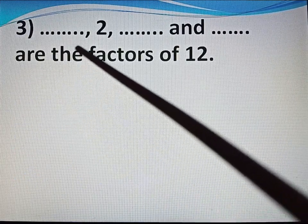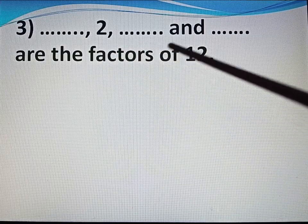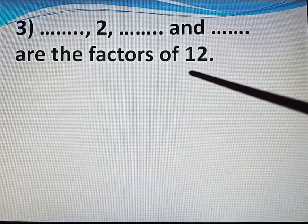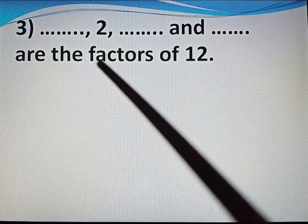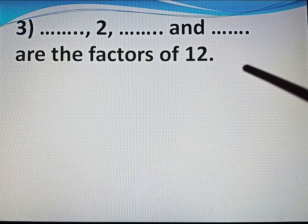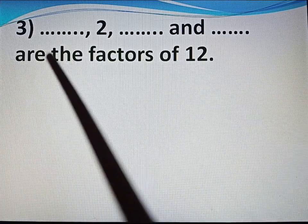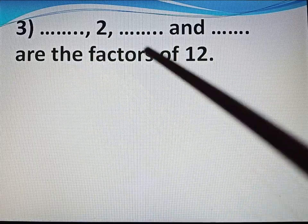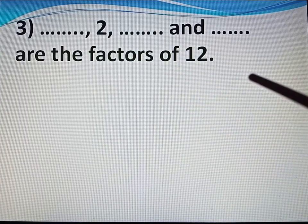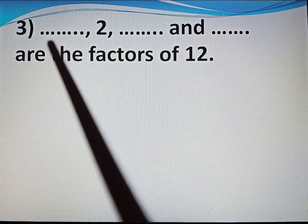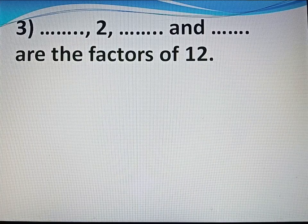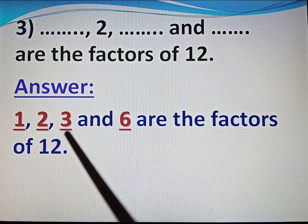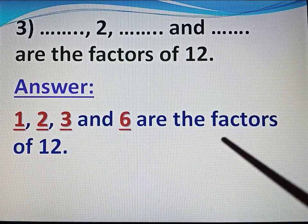Question number 3. Dash, 2, dash and dash are the factors of 12. We have to write the factors of 12. The factors of 12 are 1, 2, 3, 4, 6 and 12. There are more factors than blank spaces, so we can write any four. Answer: 1, 2, 3 and 6 are the factors of 12.